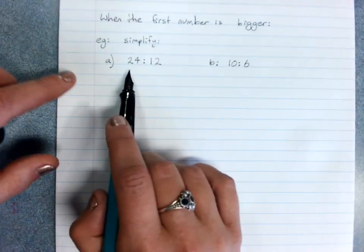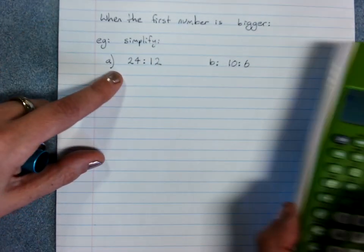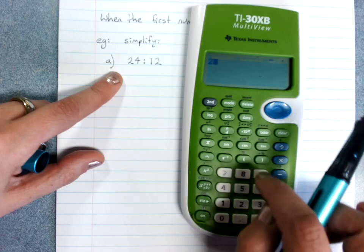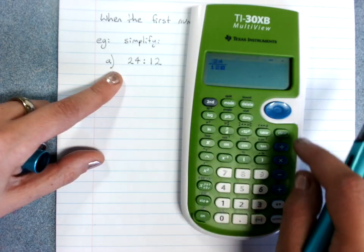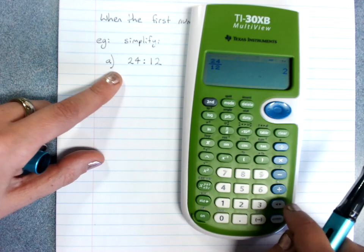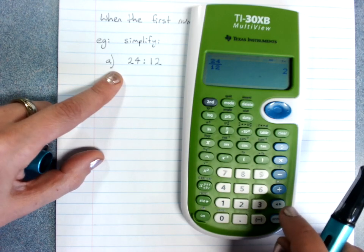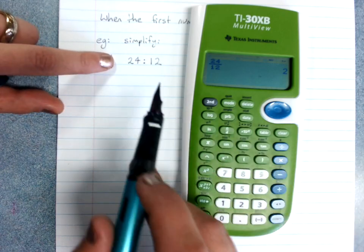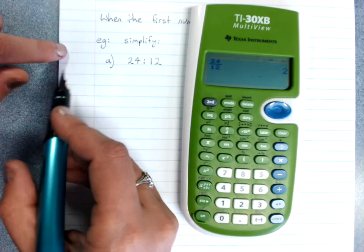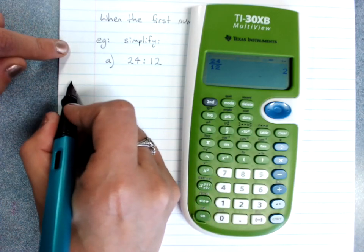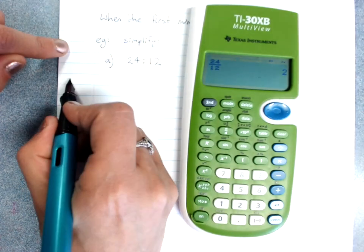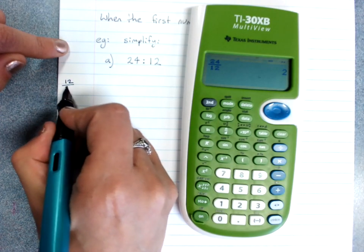So see what happens if I do 24 over 12. 24 over 12, I just get 2. If you want to use the calculator method, you'd have to change it quietly over here so that the small number was on the top. 12 over 24.